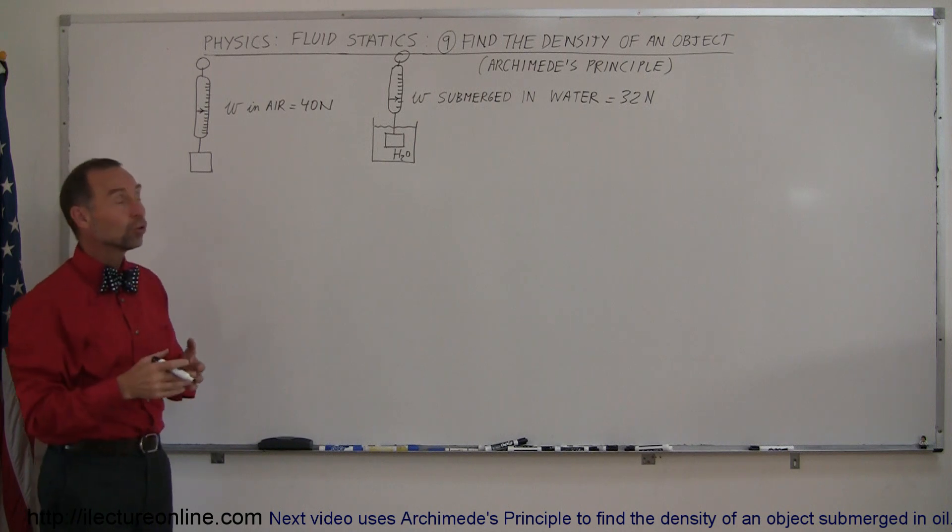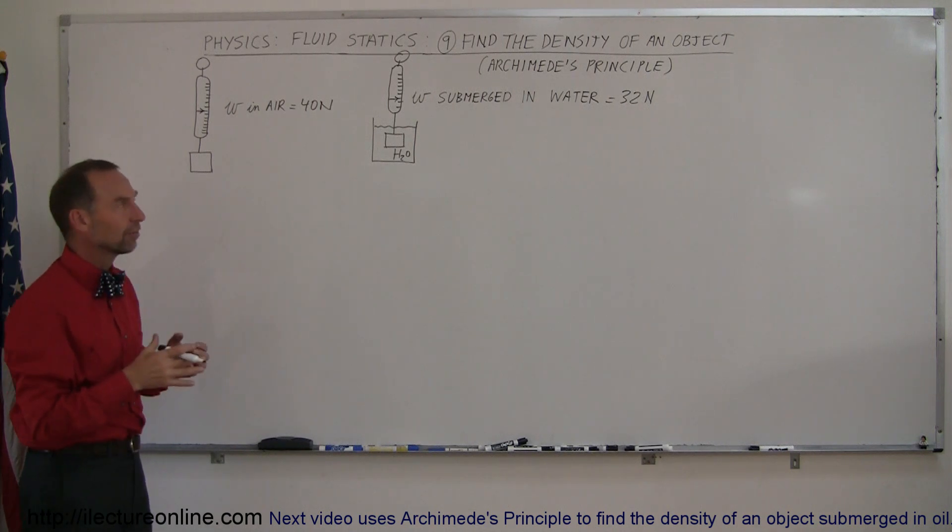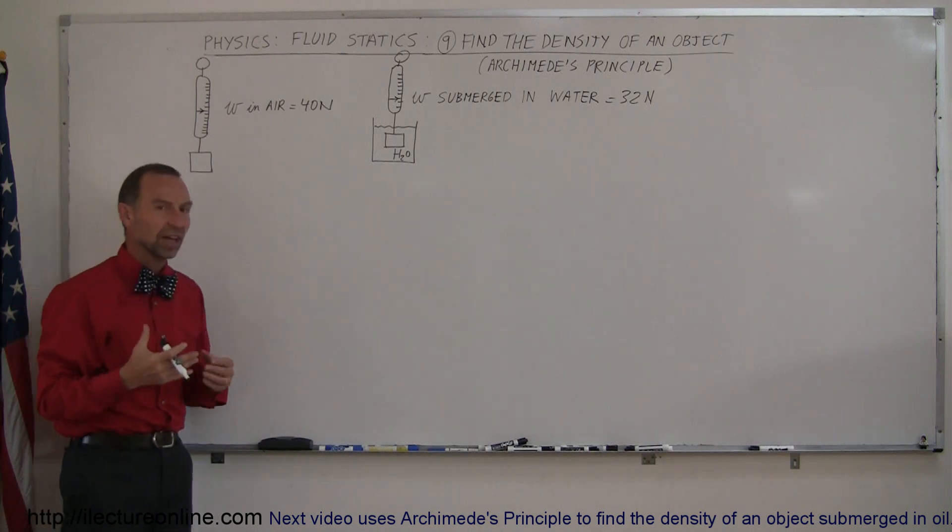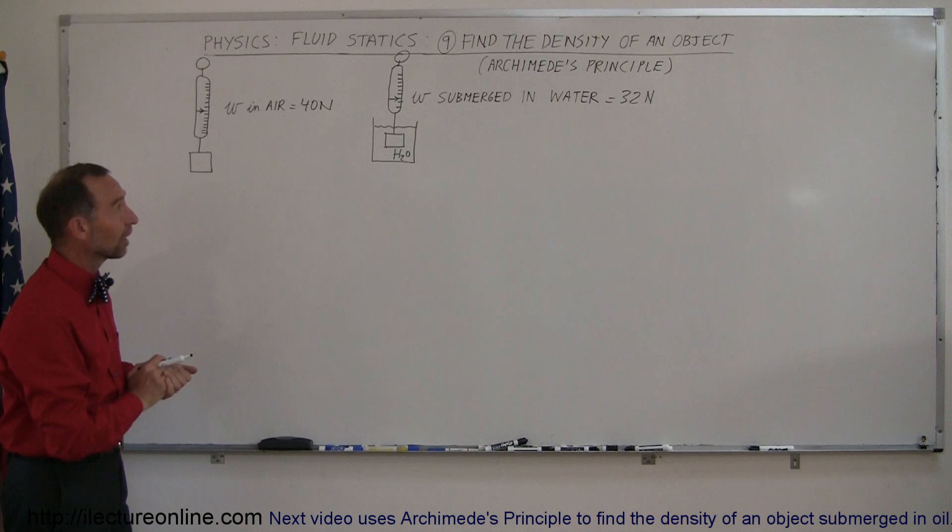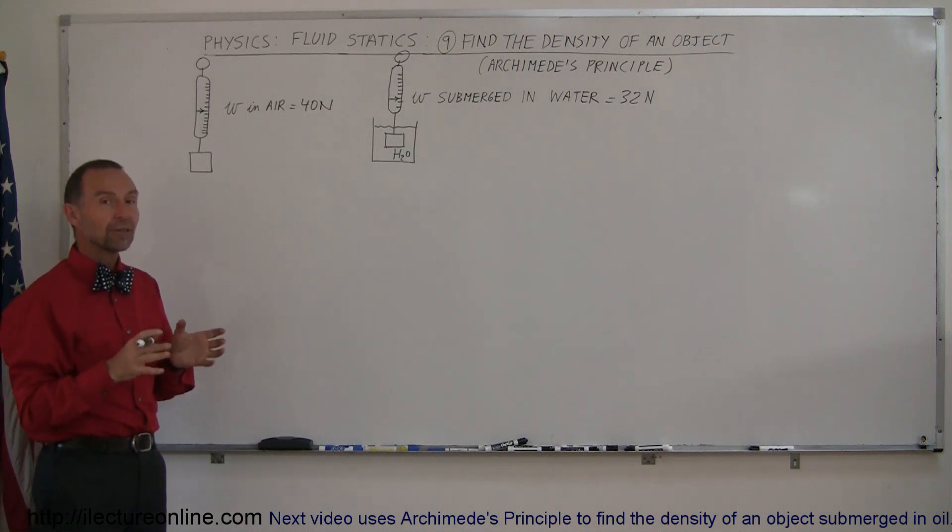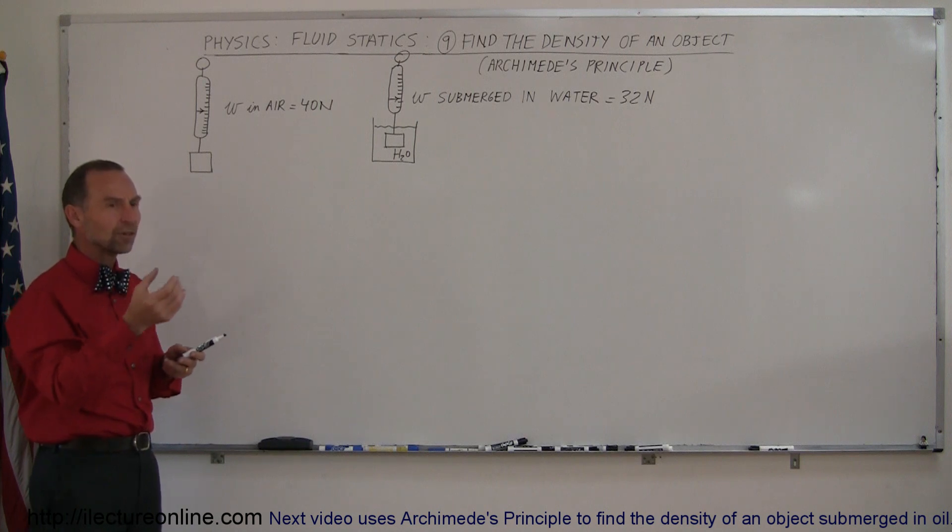And so we're going to use what we call Archimedes' Principle, that's named after the famous Greek scientist, mathematician scientist, who discovered how to find the density of objects by realizing that when you submerge an object in water, it displaces an equal volume of liquid.